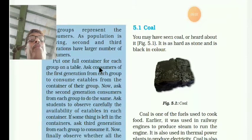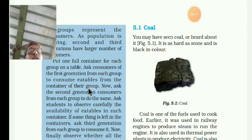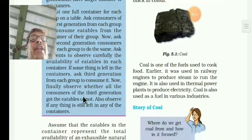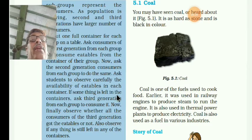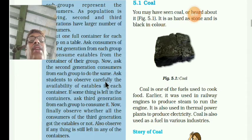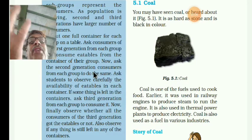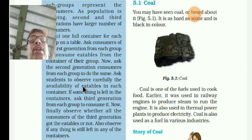Put one full container for each group on the table. Ask consumers of first generation to consume the eatables from their container. Then ask second generation consumers to do the same. Observe carefully the availability of eatables in each container. First generation uses, then second generation uses, and if something is left, ask the third generation. Finally observe whether the third generation got the eatables or not — there may be a shortage.